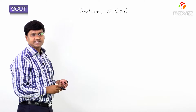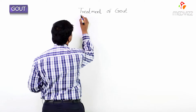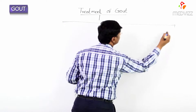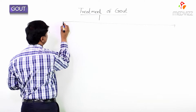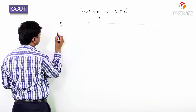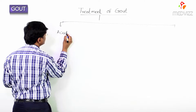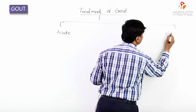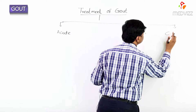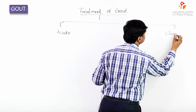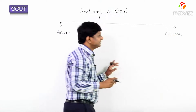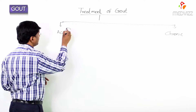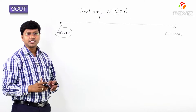Gout is classified into two types: acute gout and chronic gout.